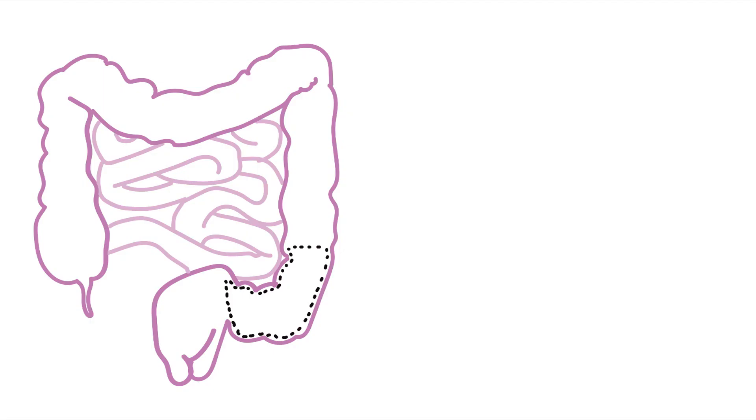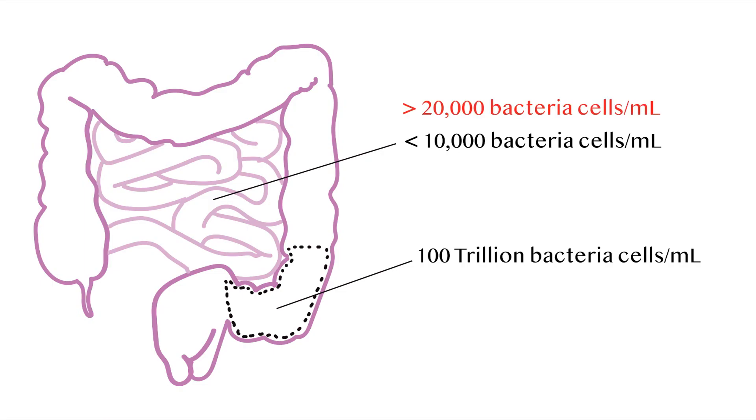Bacteria populations in your colon, where they're supposed to be, are typically over 100 trillion per milliliter. Whereas, in the small intestine, it's usually no more than 10,000 bacteria per milliliter. Any bacterial samples above 20,000 per milliliter is indicative of small intestine bacterial overgrowth.